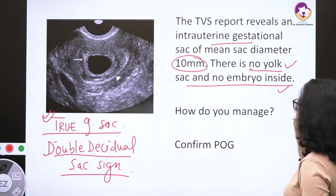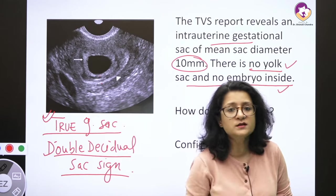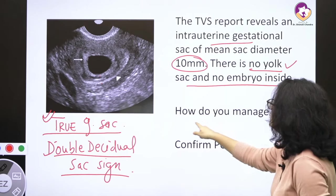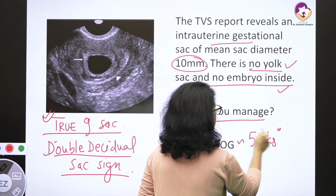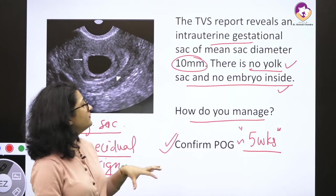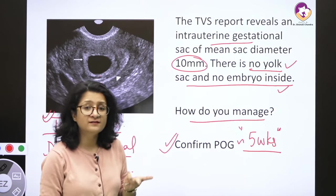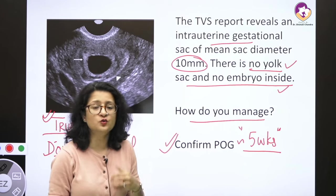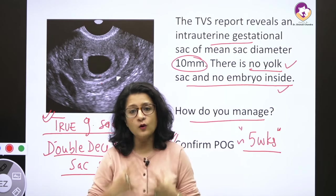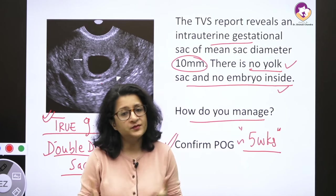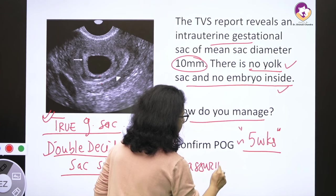The point here is that there is no yolk sac and no embryo inside. However, we do not immediately tell the woman to terminate the pregnancy. We confirm the period of gestation — let's say five weeks. At five weeks, there would normally be a gestational sac and a yolk sac inside. If the yolk sac is not there, that doesn't mean it will never come. We can ask her to wait another week or 10 days and then repeat the ultrasound, reassuring her that it may simply be a slow-growing pregnancy.